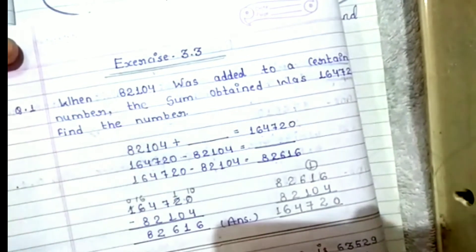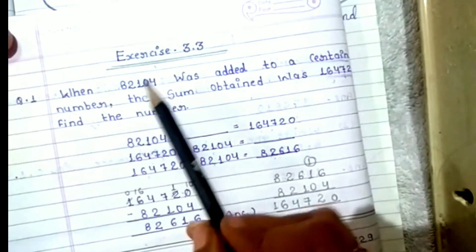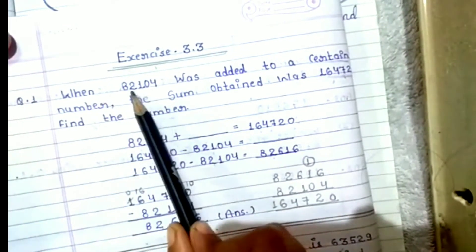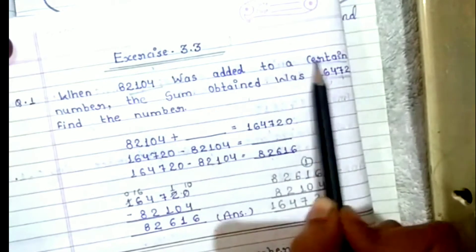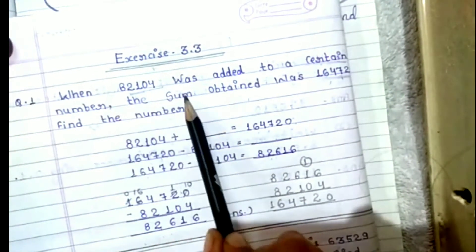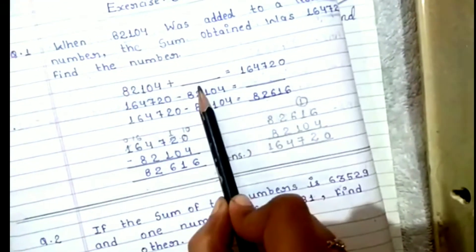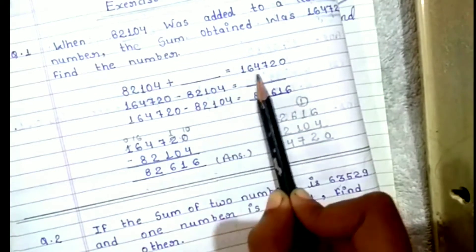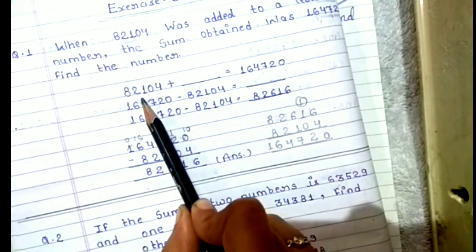That means इन्होंने बोला है कि इनके पास ये एक addend है, उसमें कोई एक certain number add कर दिया जाए तो जो उसका sum है वो ये आ रहा है। तो अभी हमने समझा था कि अगर missing addend find करना है, तो उसके total में से जो addend अपन को दिया हो, उसको minus करते हैं।